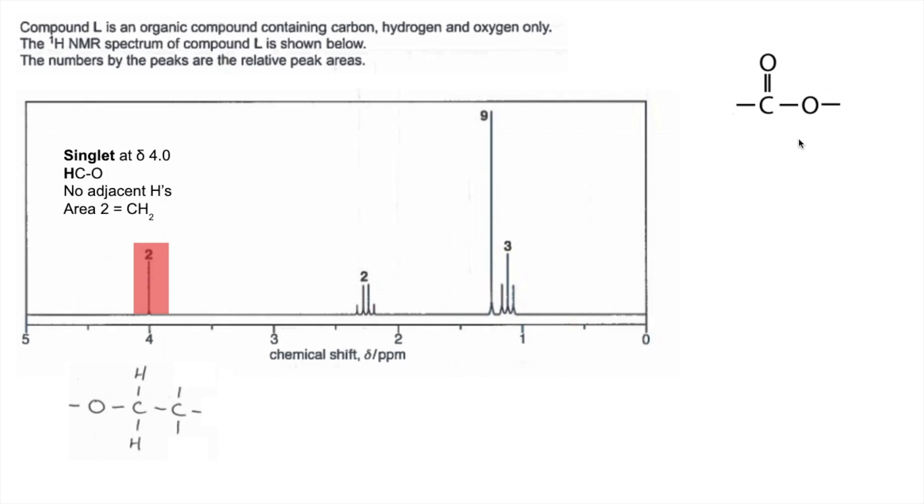So we can start building up the molecule now, so we must have a C here with 2 H's on, and then another carbon, but there can't be any hydrogens directly attached to that, otherwise we wouldn't have got that singlet.